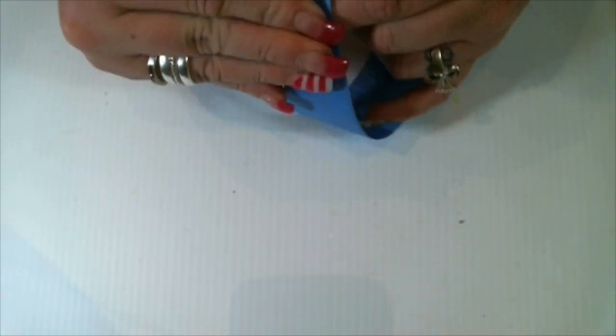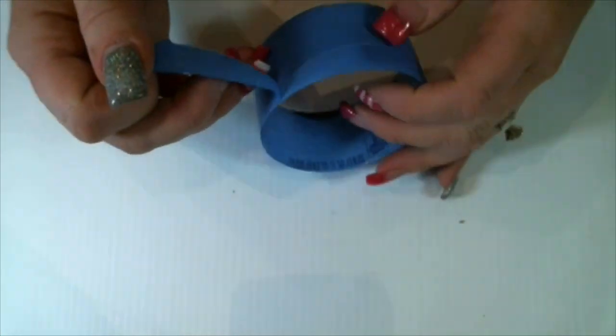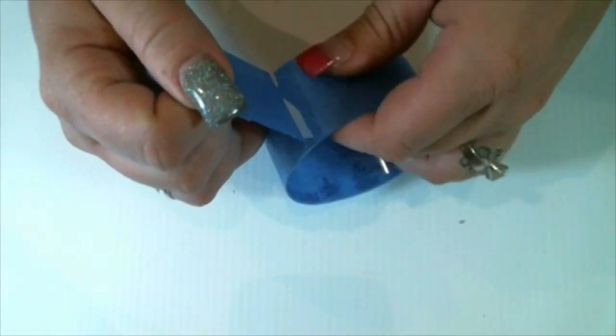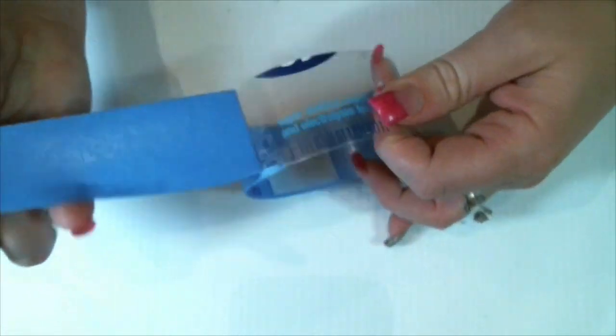Next thing you are going to want to do is take the tape off of the plastic so your glue will adhere better to the plastic.